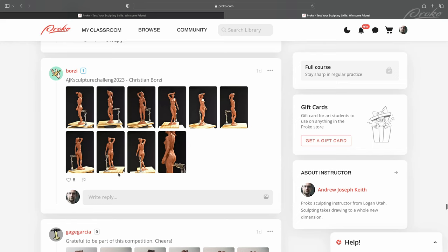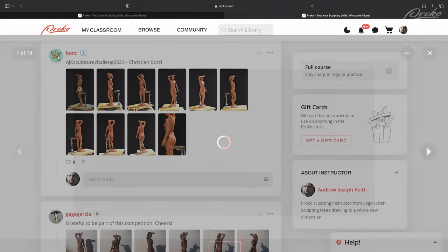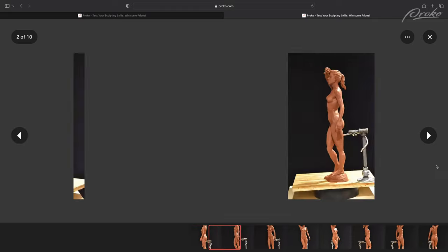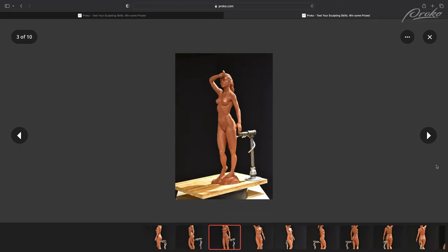The second place winner, the $150 winner, Christian Borzi. This one, it felt very accurate, knew what they were doing. If there's going to be any critique, it might have been with the documentation, but I felt like overall as a sculpture, it felt well done, well proportioned. And the details really were working with this sculpture.